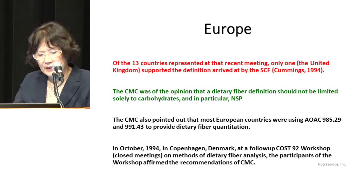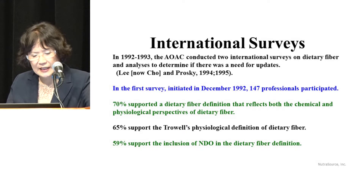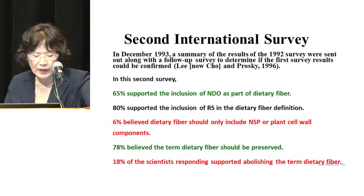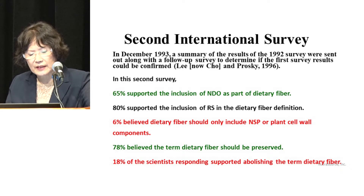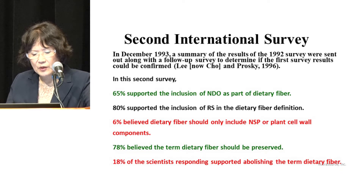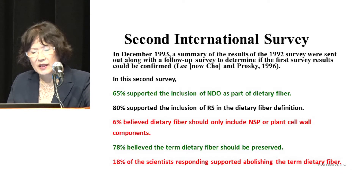Because of this debate, AOAC conducted two international surveys on dietary fiber definition and analysis to determine if there was a need for an update. In the first survey, initiated in 1992, 147 professionals participated; 59% supported the inclusion of non-digestible oligosaccharides in the dietary fiber definition. In the second survey, 65% supported inclusion of NDO (non-digestible oligosaccharides) as part of dietary fiber. 80% supported inclusion of resistant starch in the fiber definition. Only 6% believed dietary fiber should include non-starchy polysaccharides or plant cell wall components only, and 18% of scientists supported abolishment of the term 'dietary fiber.'